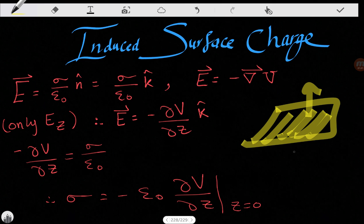So we don't have Ex or Ey, just Ez exists. So our gradient is going to be equal to minus partial V over partial z k hat. Okay, so we can just say that partial V over partial z, which is E...